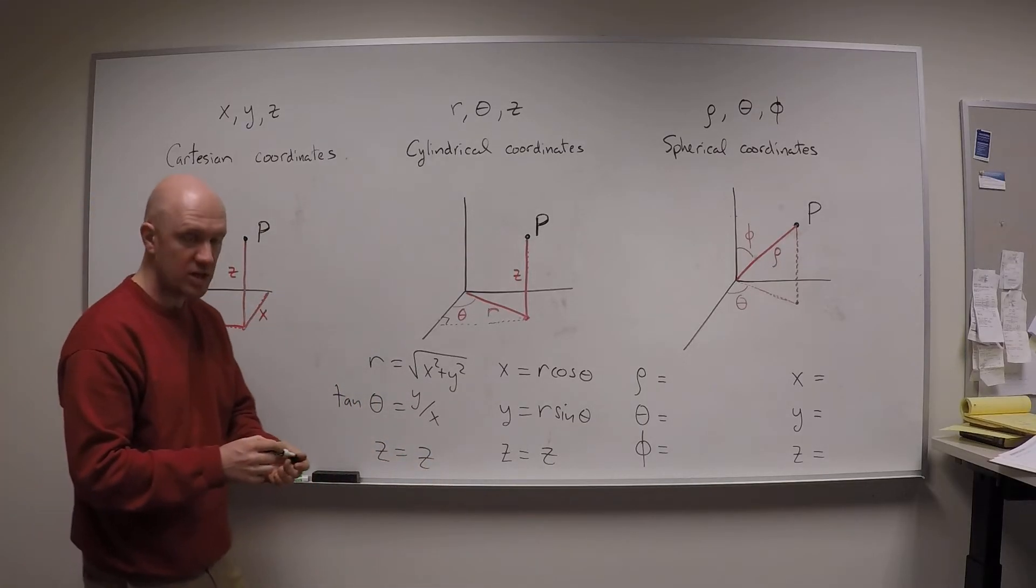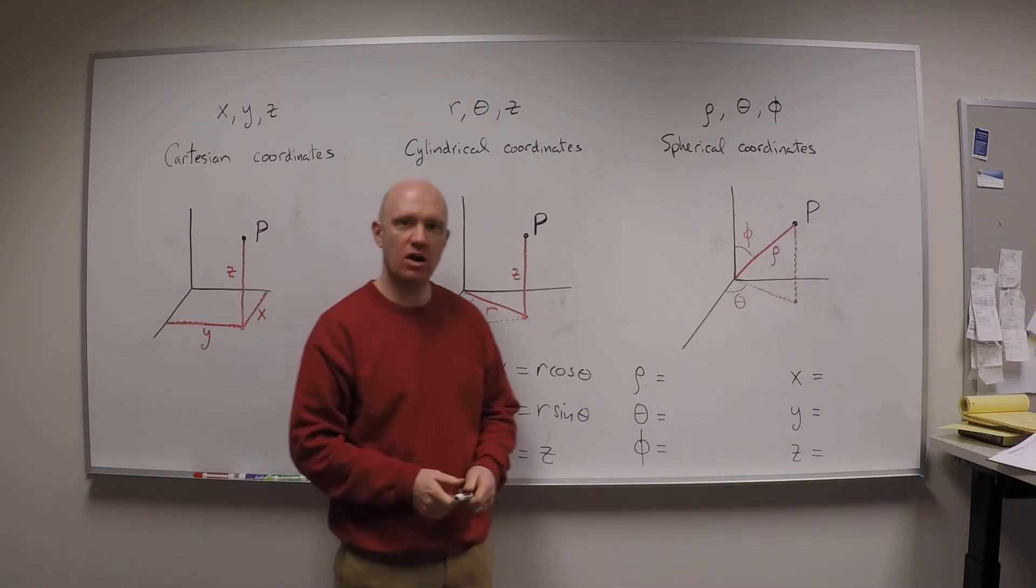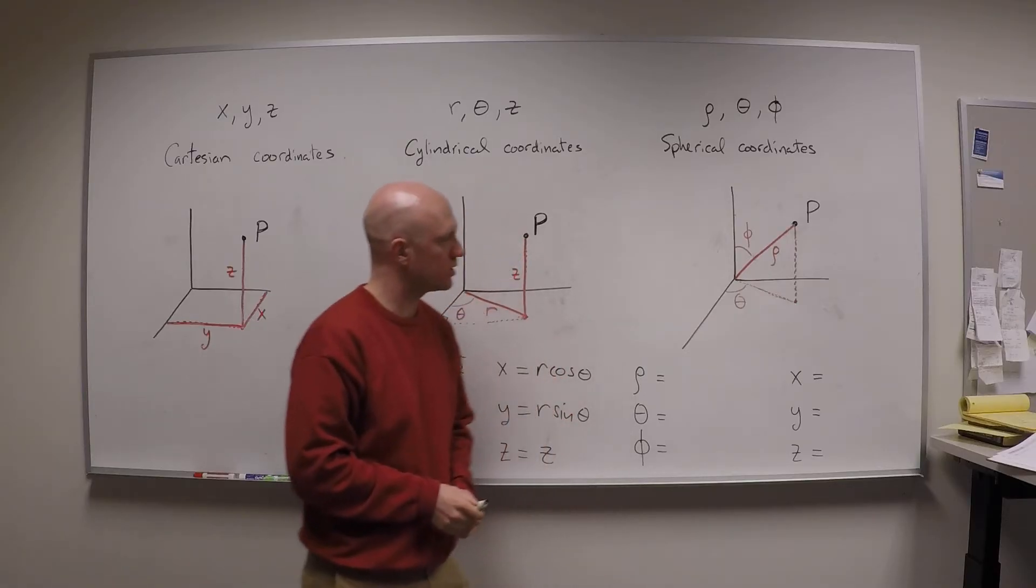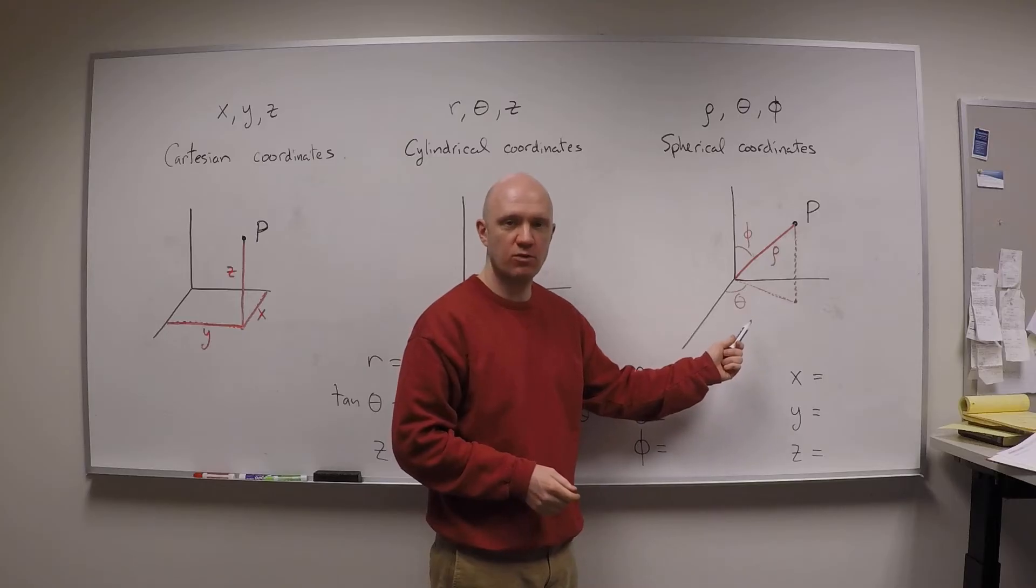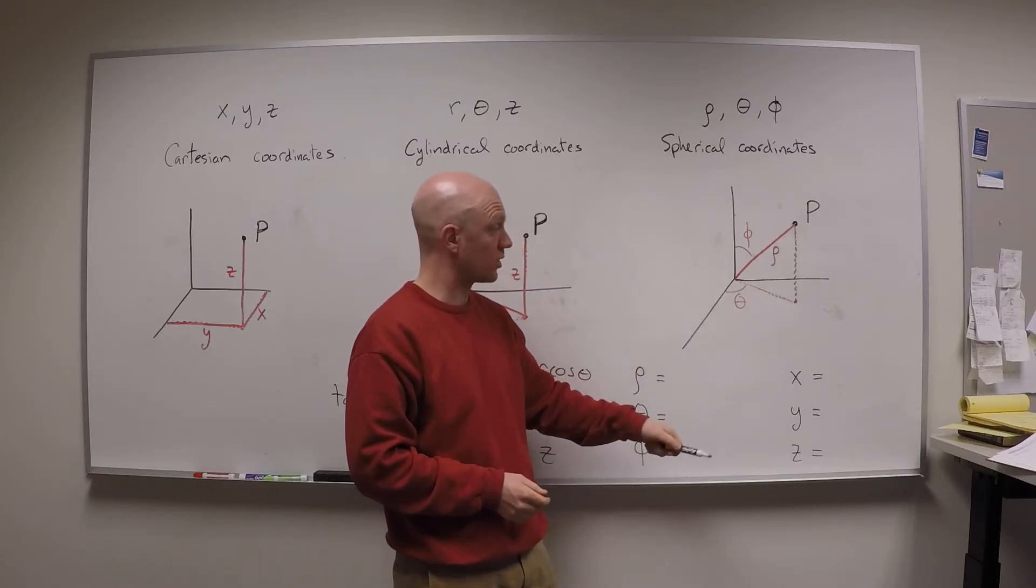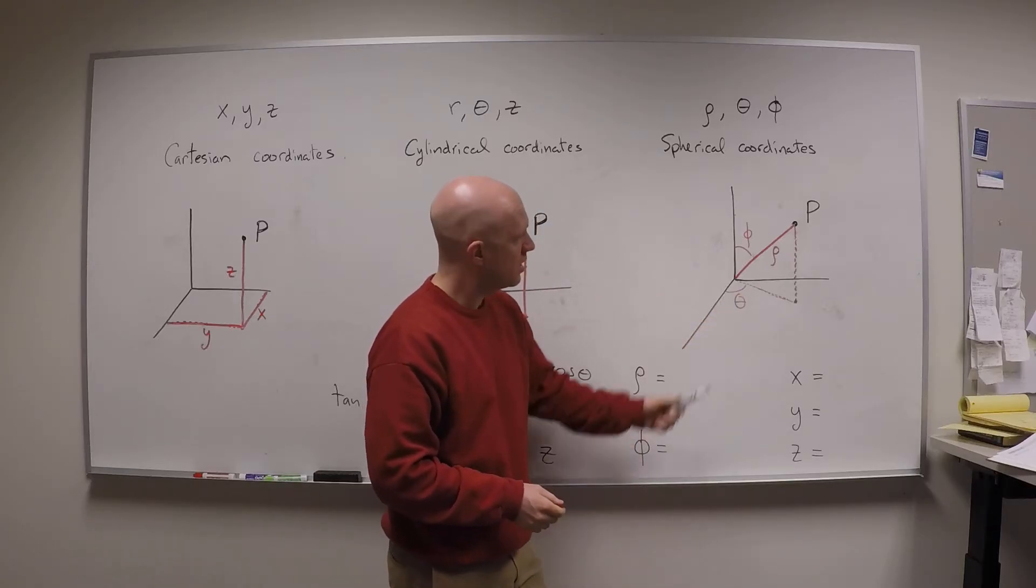Now we get to something which is a little bit new, and these are the spherical coordinates. This one is kind of the hardest, I think, to get comfortable with. So in this case, the only familiar thing left over is the theta from both cylindrical and polar coordinates. So that theta is still the angle subtended with the x axis.